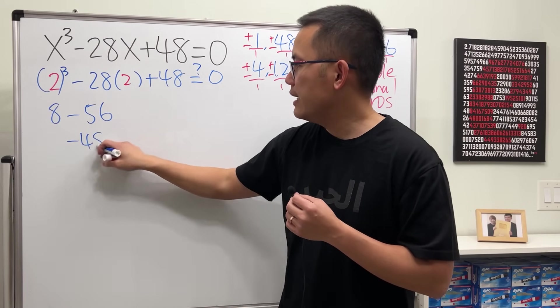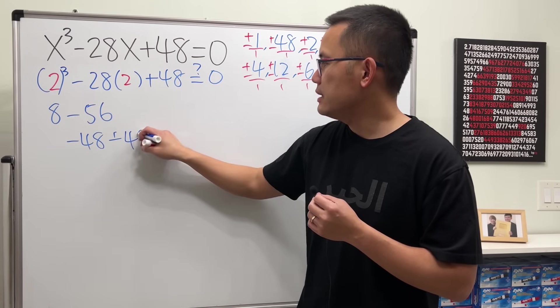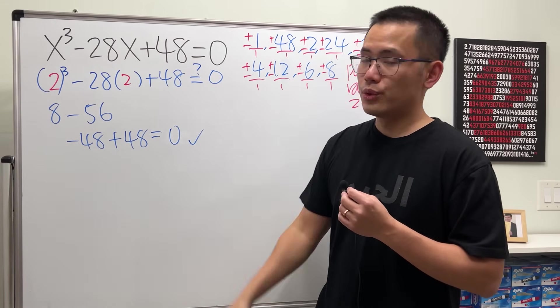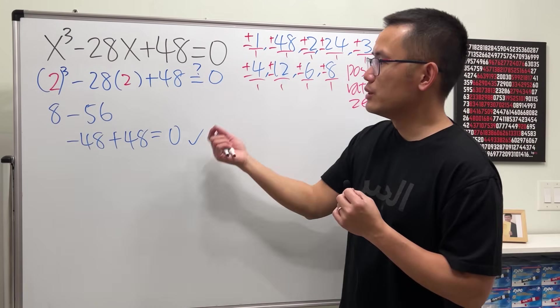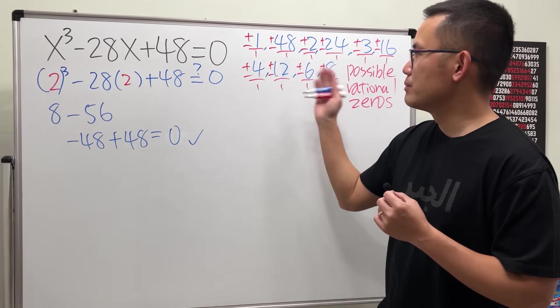Together this is negative 48 plus the 48 is indeed equal to zero. So two is a root, and you can just do this real quick, just kind of plug in numbers and all that.